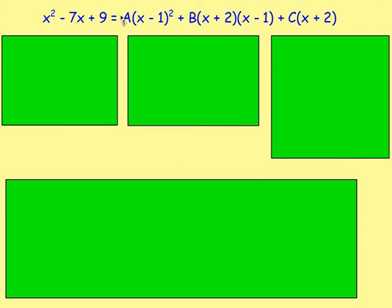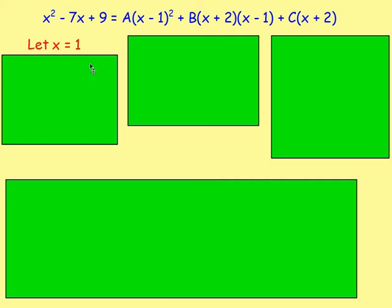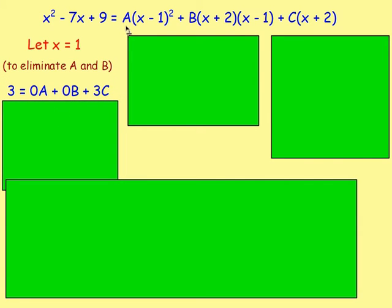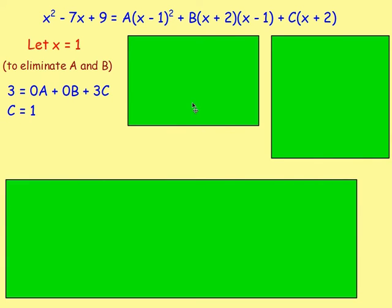We want to find values of a, b, and c by choosing different values of x. The best approach is to look at what's in the brackets. We've got (x-1)² — if that equals 0, it eliminates a and b. So let x equal 1. If x is 1: 1 squared take away 7 times 1 add 9 gives us 3. Then (1-1) is 0, so 0 times a eliminates a; (1-1) is 0 times b eliminates b; and (1+2) is 3, so we have 3c. Therefore 3c equals 3, meaning c equals 1.